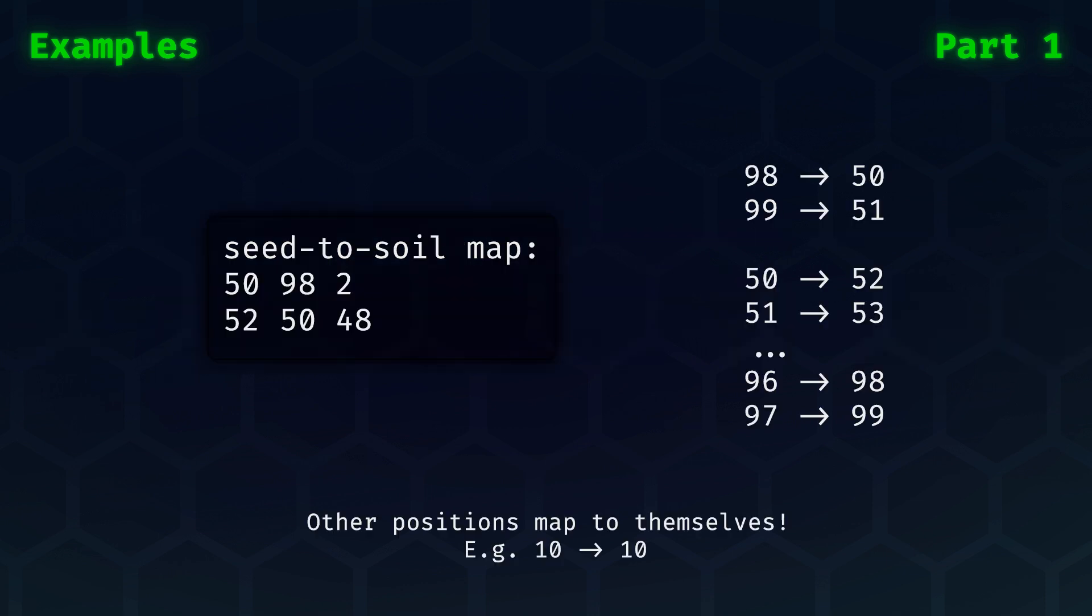An individual map can be understood as follows. Suppose that we have 50, 98, and 2, then this means seeds at indices 98 and 99 need to be mapped to positions 50 and 51 in the soil. To emphasize, the left number is the starting position of a range in the soil property. The middle number is the starting position of a range in the seed property. The last number indicates the length of the range.